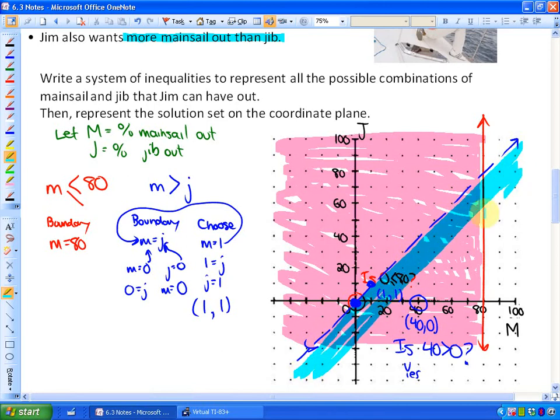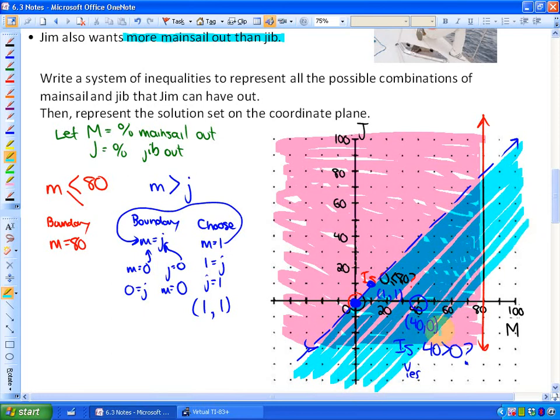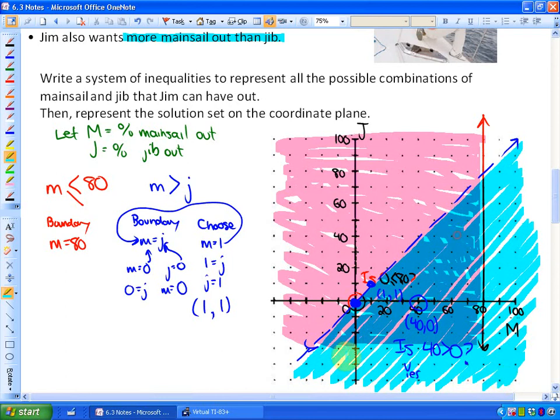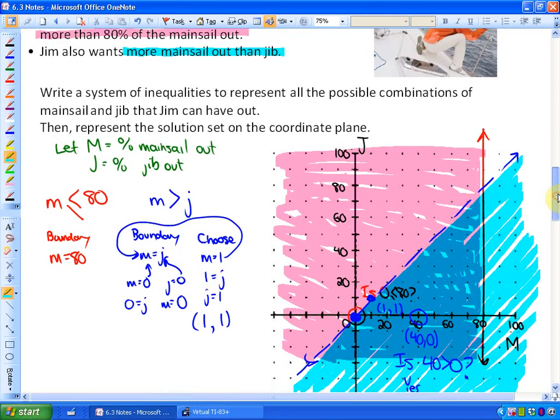So while I am shading this, what you are noticing is that while I am highlighting the blue over the pink, they combine to make some purple color, and that purple color is actually the solution region. So what that solution region indicates, this purple region here, or the dark blue color that you are seeing here, that indicates coordinates or combinations of mainsail and jib where both of the criteria, both of the constraints are met.